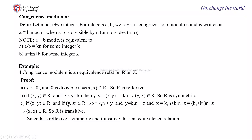For transitivity: if (x, y) belongs to R and (y, z) belongs to R, then x = K1·N + y and y = K2·N + z. Substituting the value of y: x = K1·N + K2·N + z = (K1 + K2)·N + z, which indicates (x, z) belongs to R. Therefore, R is transitive. Since R is reflexive, symmetric, and transitive, R is an equivalence relation.